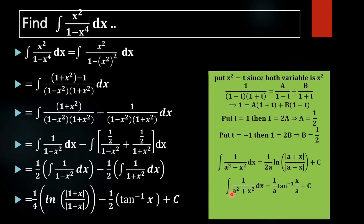Then for the integral of 1 over a squared plus x squared, we use the formula: integral equals 1 over a times tan inverse of x over a. Utilizing this formula we will get tan inverse of x plus C. Here a equals 1 in both cases.